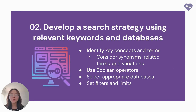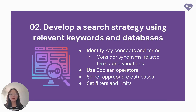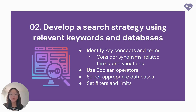The next step is to develop a search strategy. Start by identifying the key concepts and terms in your question, then break it down into its essential components. For example, if your question is about how AI affects student engagement in education, your key terms might be AI, education, and engagement. For key terms, don't forget to consider synonyms, related terms, or variations — like using both 'AI' and 'artificial intelligence' in your search.